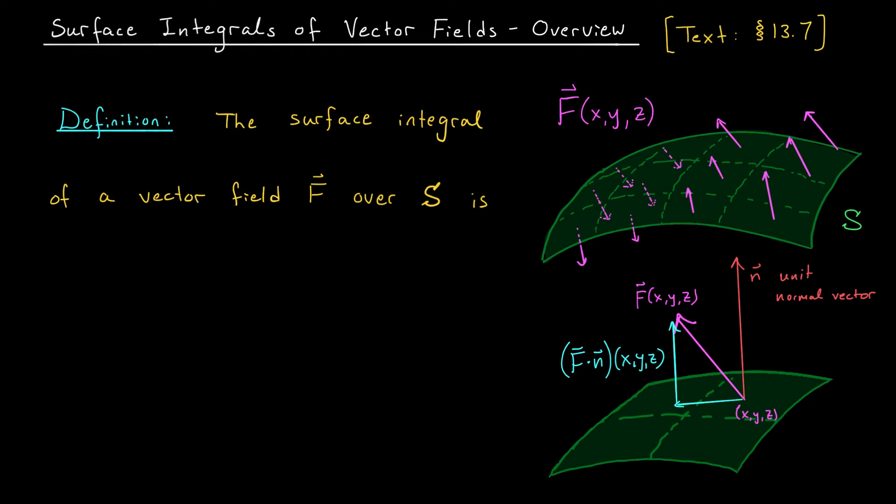So to determine the net rate of flow through this surface S, we effectively want to add up these forces F dot N over the entire surface itself. Ah, but if we're adding up these values over the entire surface, we're really computing a surface integral, right? We're computing the surface integral of this scalar field F dot N. And this, folks, is what we define to be the surface integral of our vector field. We define the surface integral of the vector field F over the surface S to be the surface integral of F dot N over S. This represents the net rate of flow of our fluid through the surface S. We sometimes refer to this as the flux of our vector field.